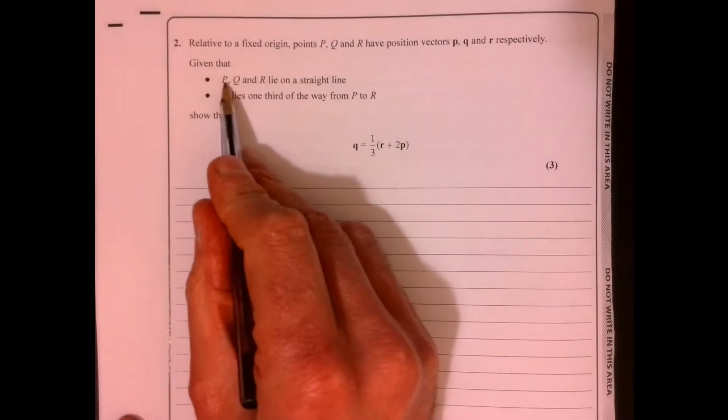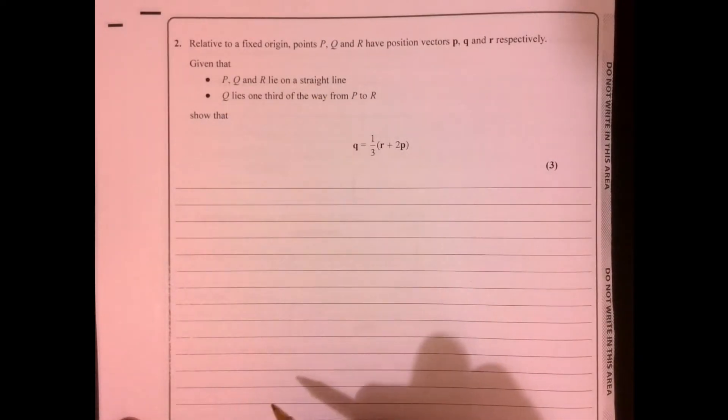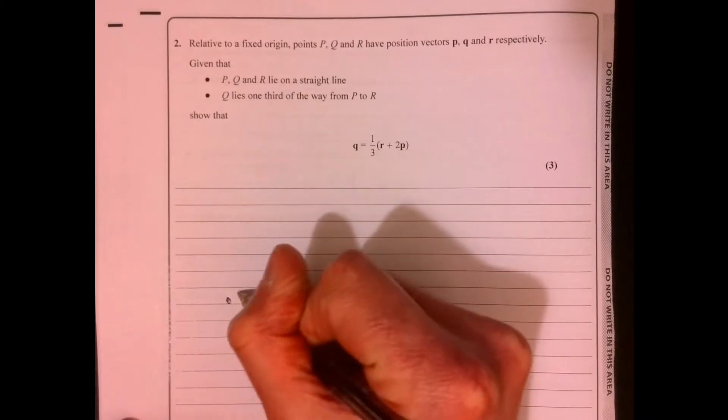Question 2. So it says these three points are on a straight line. So let's represent what we've actually got.